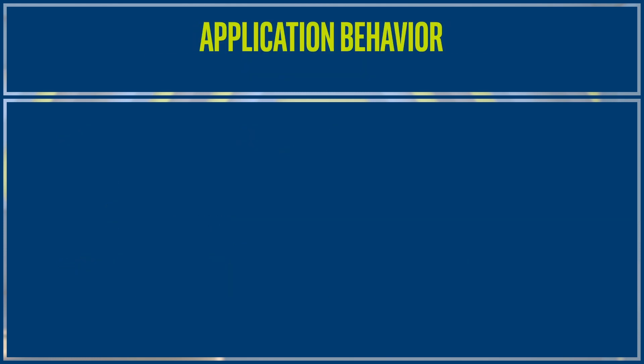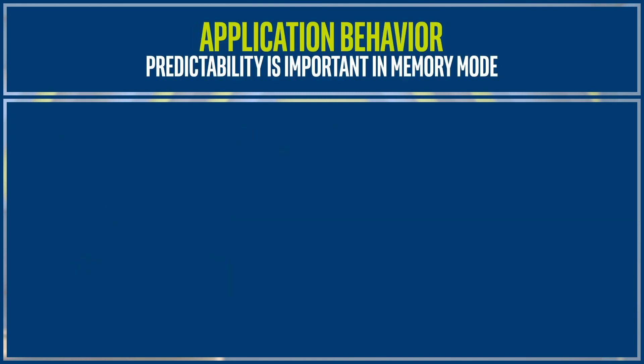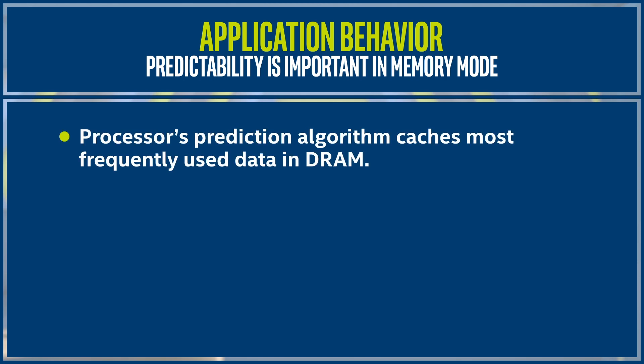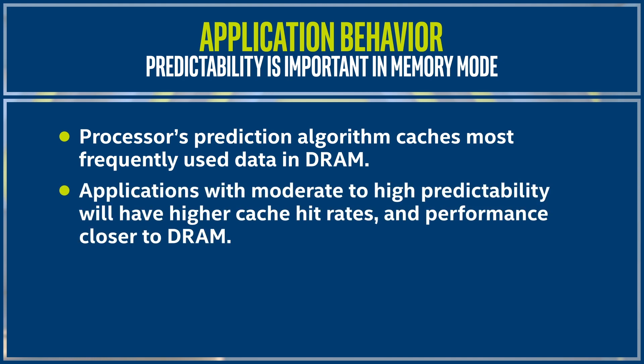The final factor is application behavior. The Intel Xeon processor uses a prediction algorithm to cache the most frequently used data in DRAM. If the application has moderate to high levels of predictability, the probability of successful caching increases. When that happens, the response latency is the same as DRAM.